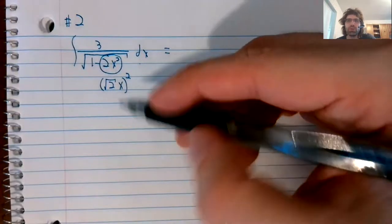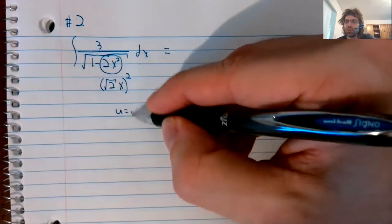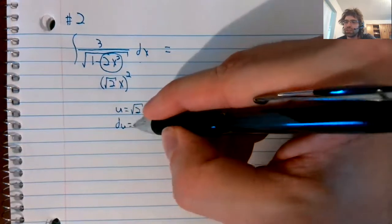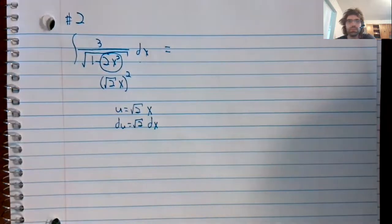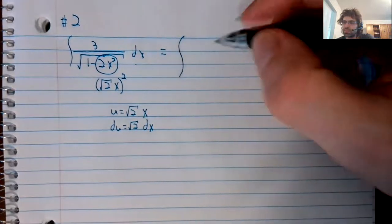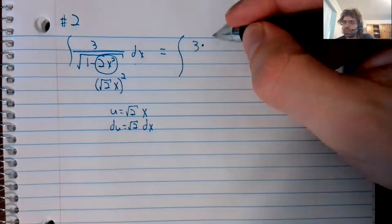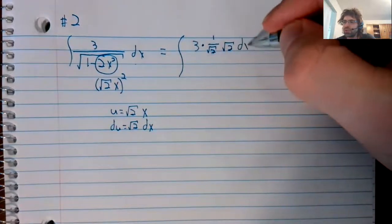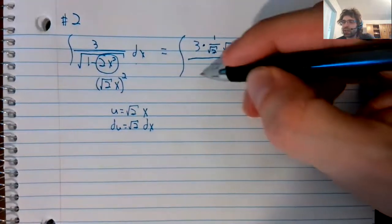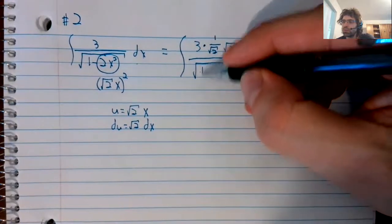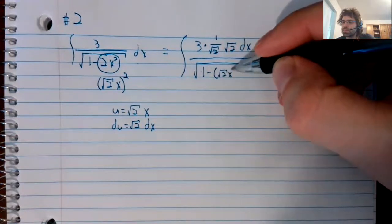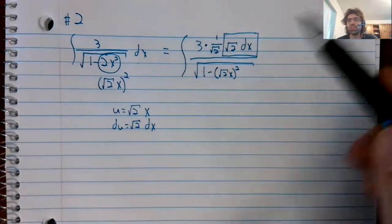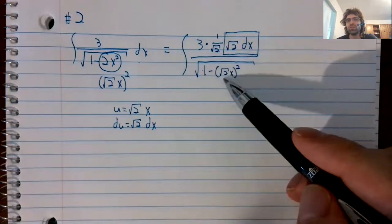So the trick is to rewrite this as a square. And then perform u substitution. We can let u be the square root of two times x. Then du is the square root of two, dx. Three, if we need a square root of two, that's a constant. So we can put it in as long as we divide by it as well.